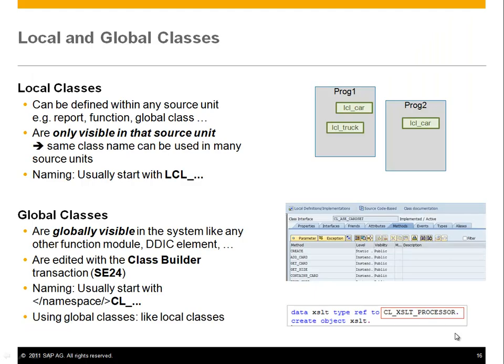So far in the first exercise we've dealt with local classes, which can be defined in any source unit — in a report, which we've done, even a function module, even as a subunit, and so forth. It's like a form in that it's only visible in that source unit, which means the same class name can be used in many source units and they don't conflict with each other. By convention, those classes start with LCL for local class.